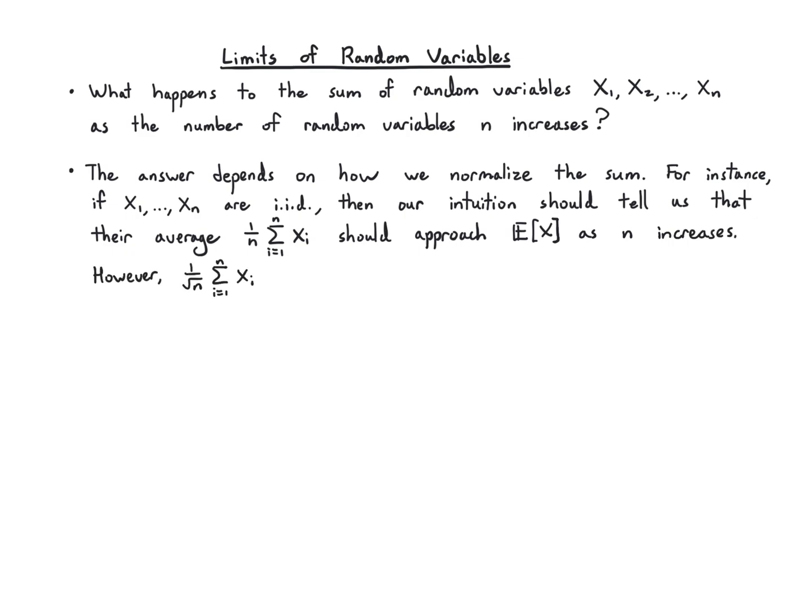And that's true, but 1 over √n times the sum will actually behave more like a Gaussian random variable with mean E[X]. We'll see why that's true in this video, and we'll try to make this a bit more precise.